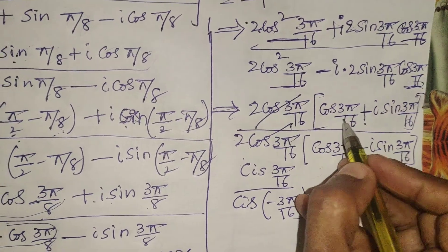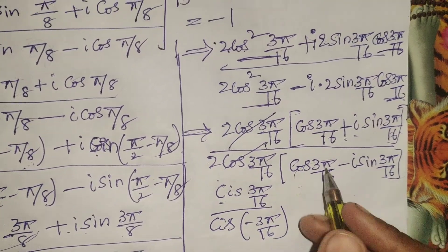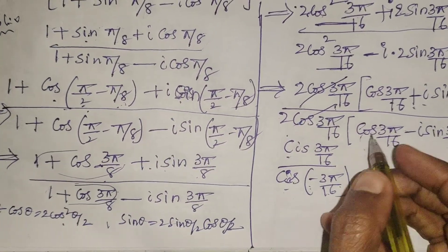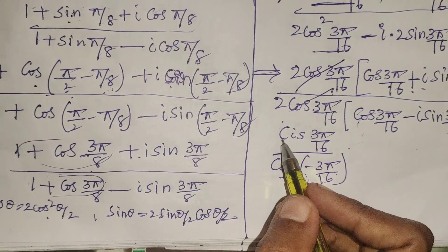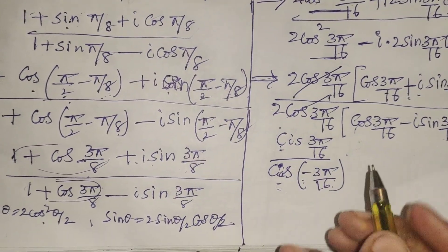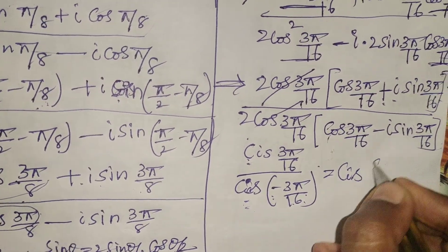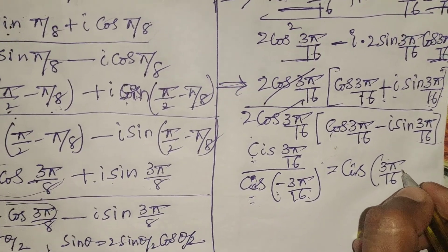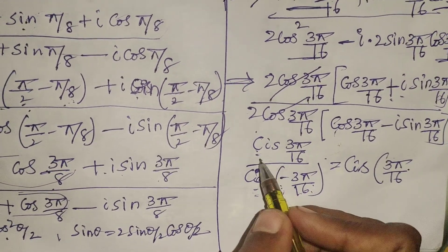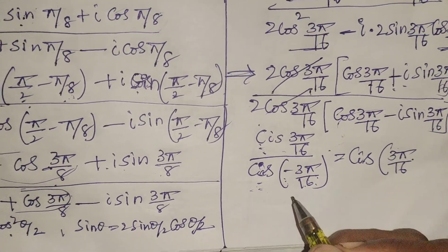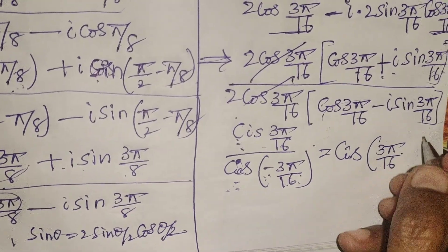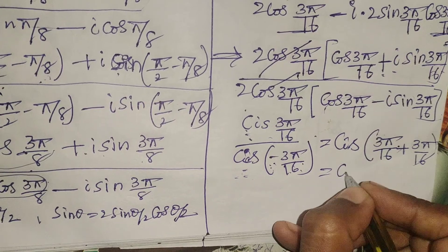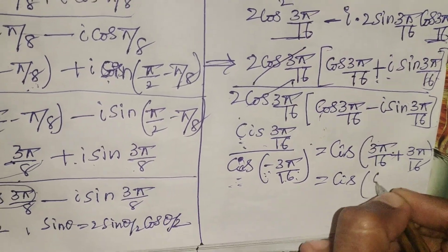We know that cos θ + i·sin θ = cis θ. Applying cis notation here, but minus is there, so we have cis(3π/16) / cis(-3π/16). We know the formula: cis α / cis β = cis(α - β). So here we get cis(3π/16 - (-3π/16)) = cis(6π/16).